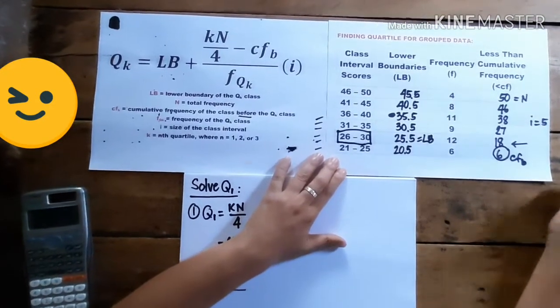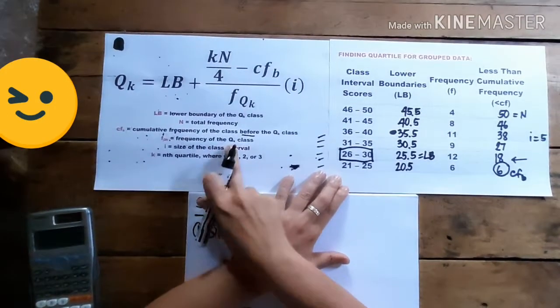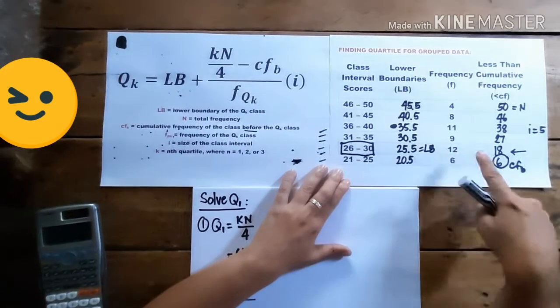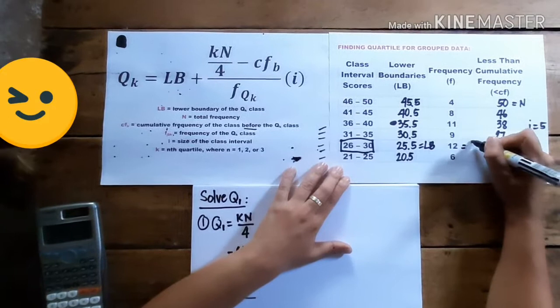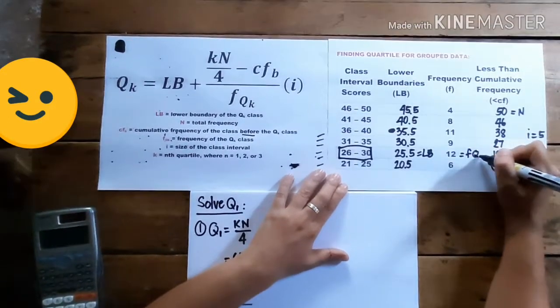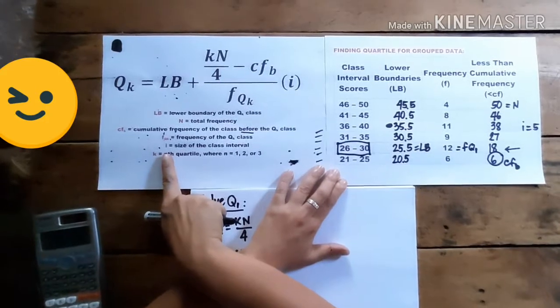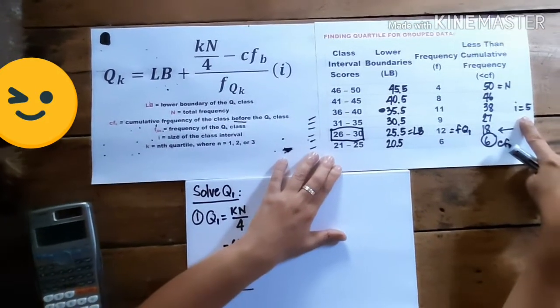Next is the frequency of the quartile 1 class. So if this is the class interval of our quartile 1, that means this is the frequency, which is 12. So this is our FQ1. And then, of course, our I, the class interval, that we solved in the very first step.